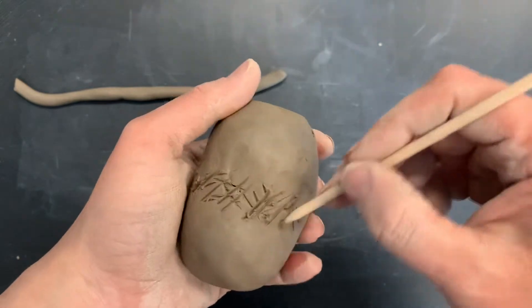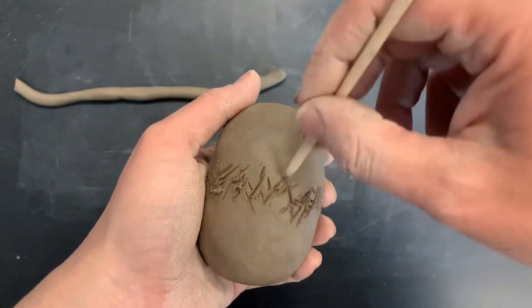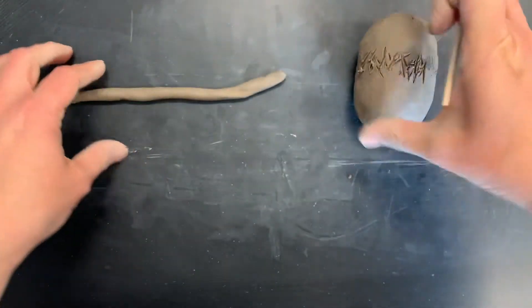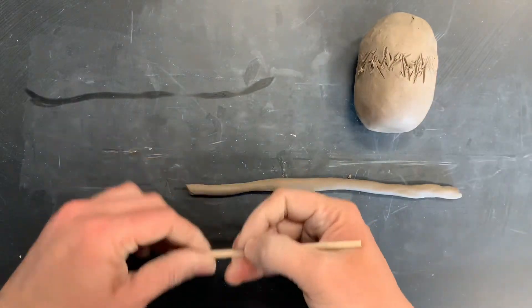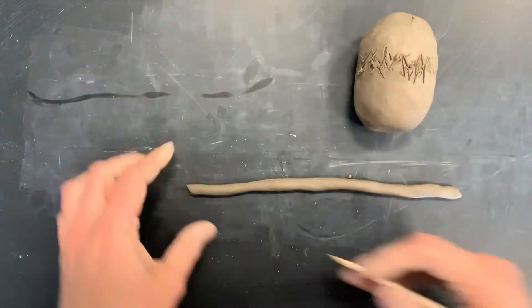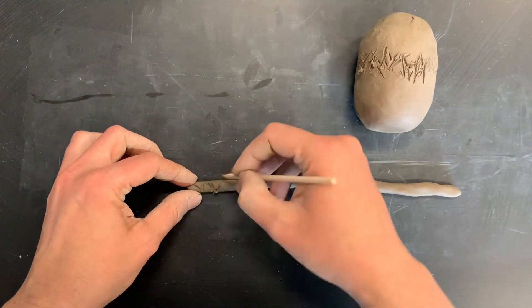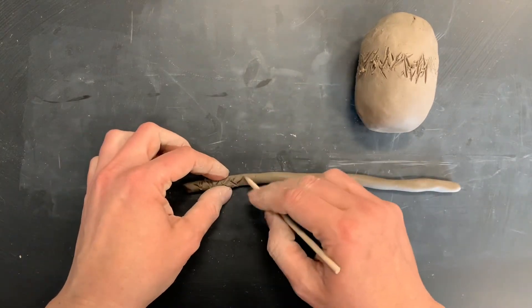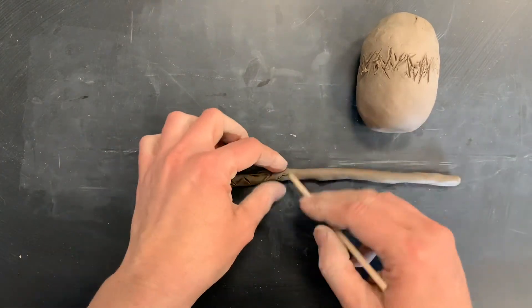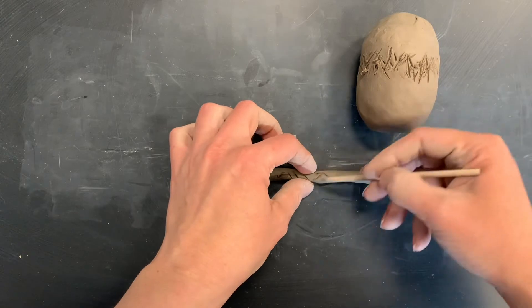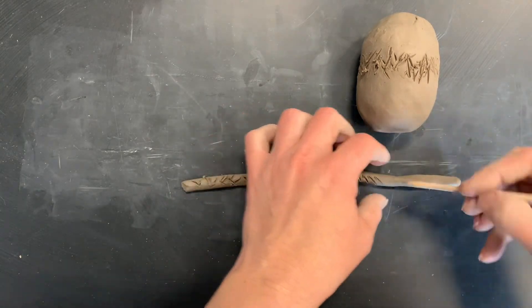If you can still see where you blended the two pinch pots together, then go right along that seam. Now I'm going to score my coil using those crisscross lines, sometimes like cross hatching or x's. Go all the way down to the end of your coil.